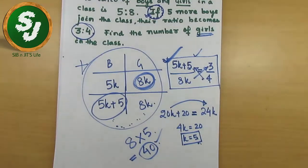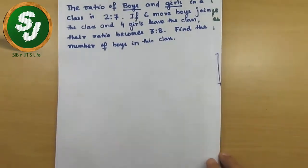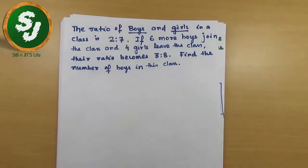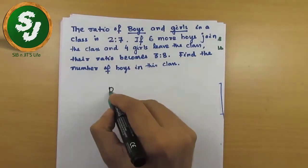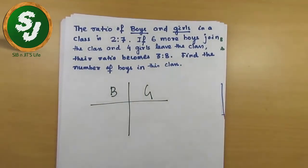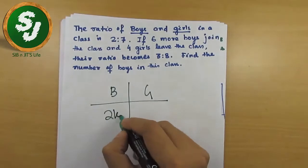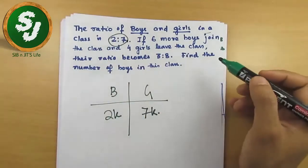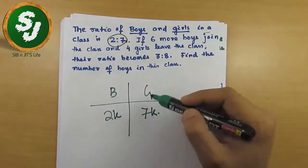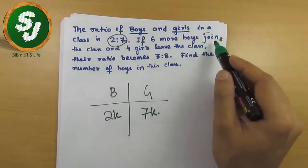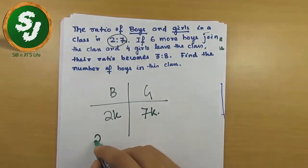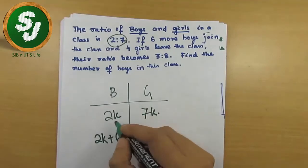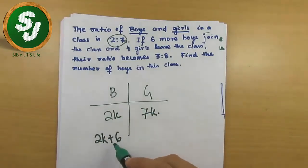Here is another question using the same technique. The ratio of boys to girls in a class is 2 is to 7, so boys = 2k and girls = 7k. If 6 more boys join the class, the number of boys becomes 2k plus 6.